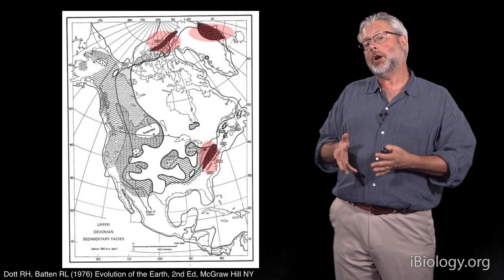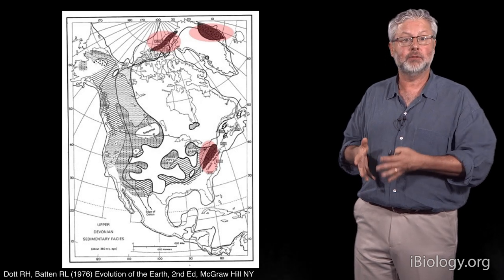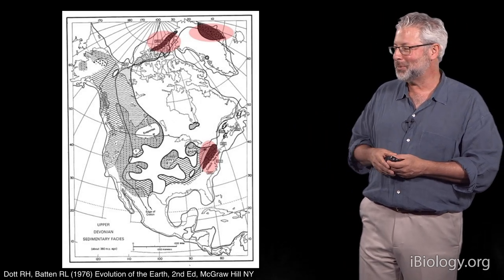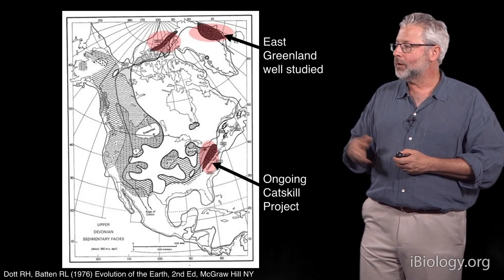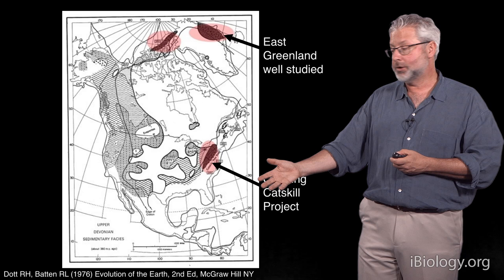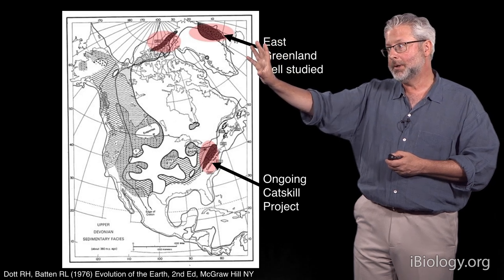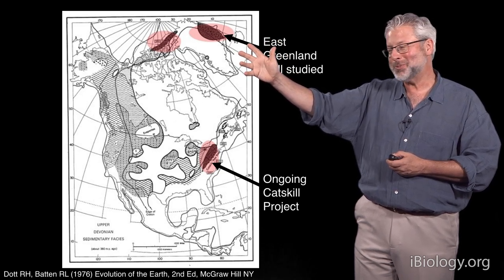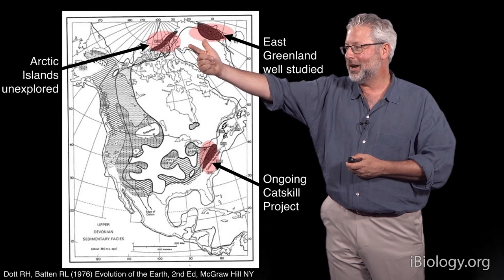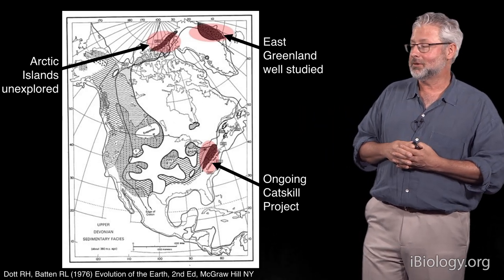It became clear very early in our study that the best places with these kind of delta systems of the right age in the late Devonian period were centered in three general places in North America. This slide is actually taken from an undergraduate college geology textbook, which helped us launch a number of expeditions. Two of these areas were already known — we had worked on the so-called Catskill rocks of eastern Pennsylvania, and other colleagues had worked in East Greenland. Yet this diagram led us to the Arctic: rocks of the right age and type, exposed across the surface in an area completely unexplored by vertebrate paleontologists.